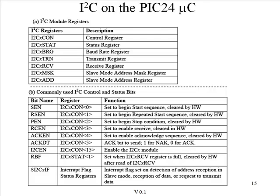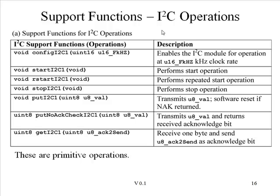The I2C protocol on the PIC24 microcontroller is implemented in hardware, and a number of control and status registers allow the user to write code which implements the I2C protocol on the PIC. What we'll focus on today is the use of some slightly higher level functions — for example, to begin an I2C transaction with a start and end it with a stop, and to put or get data eight bits at a time on the bus.